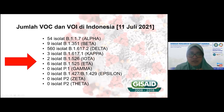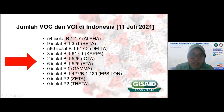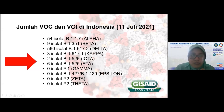Saat ini varian delta lagi outbreak lagi di beberapa negara seperti Singapura dan UK. UK kemarin muncul 100 ribu kasus untuk delta ini. Dan sekarang ada varian baru yaitu delta plus, mutasi lagi dari varian delta. Ini adalah varian VOC dan VOI yang didapatkan dari GISAID per 11 Juli 2021, di mana terbanyak adalah varian delta, yaitu sudah ada 560 isolat dari varian delta yang dilaporkan.